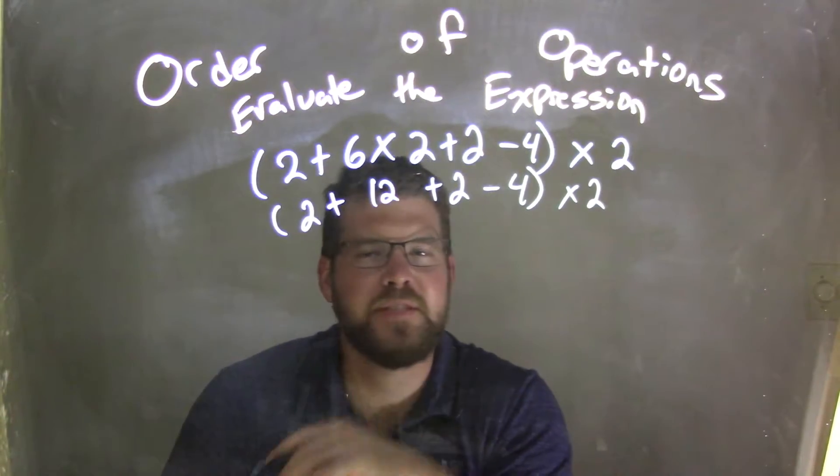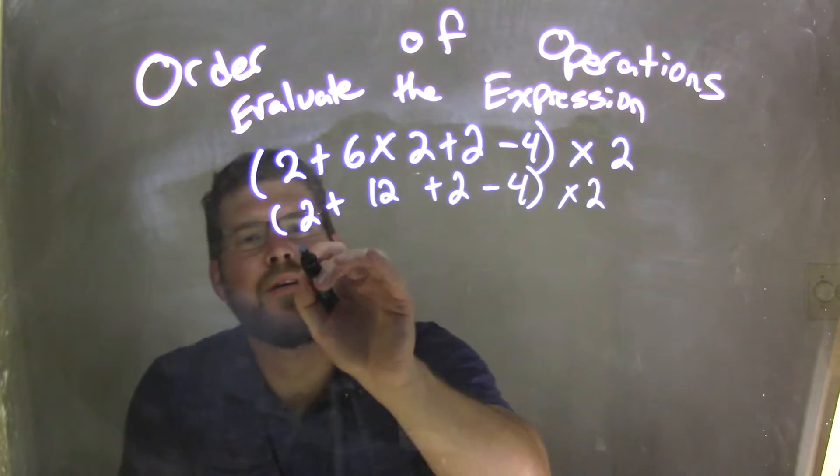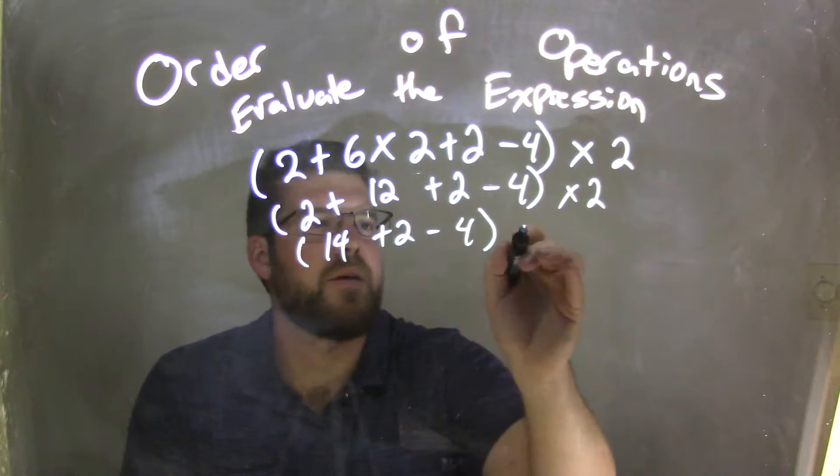Now let's go left to right. Keep it simple, left to right. It's all addition and subtraction inside the parenthesis. So 2 + 12 is 14, plus 2 minus 4, times 2.